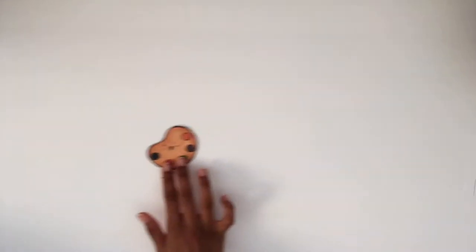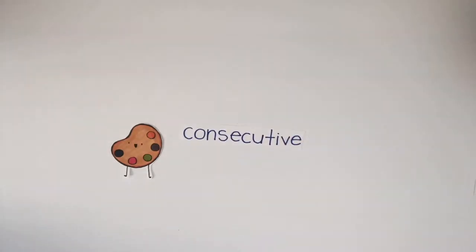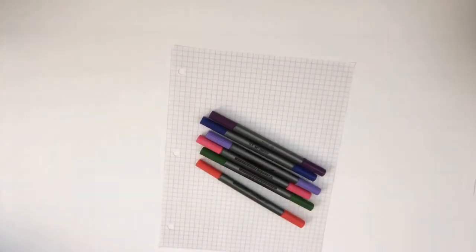Today, we are going to be making spiral laterals using the idea of consecutive numbers. For this project, you will need a piece of graph paper or dotted paper and some colorful markers.